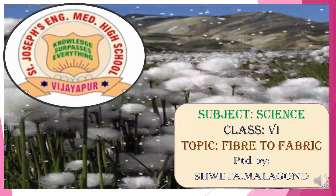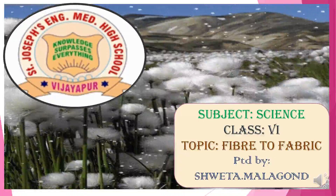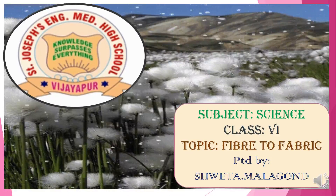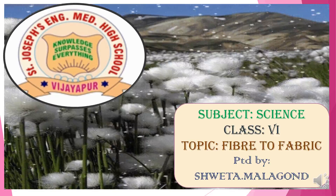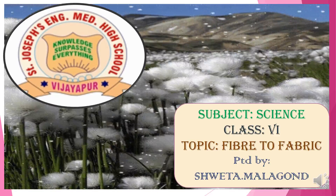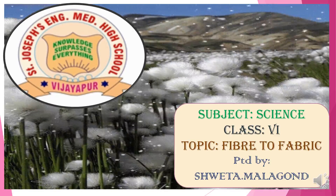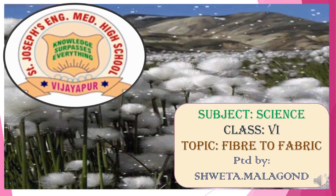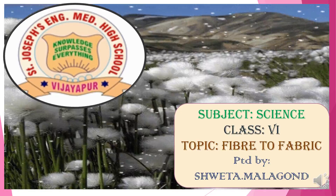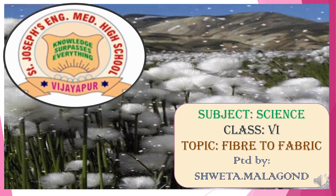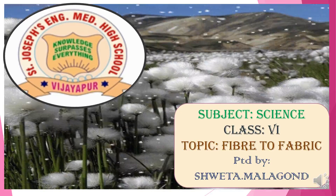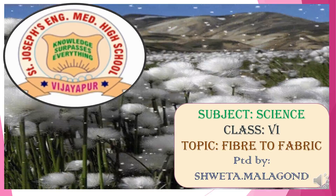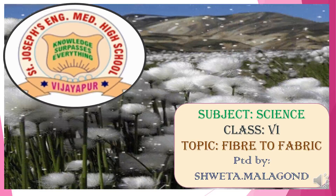Hello students, good morning, welcome back to our science class. Today is the second class of our third topic, that is fiber to fabric. In the previous video we understood the meaning of yarn, fiber, natural fibers and artificial fibers. Natural fibers like cotton, wool, silk, and flax are examples of natural fiber. Man-made fibers are also called synthetic fibers — rayon, nylon, and polyester are examples of synthetic fibers.